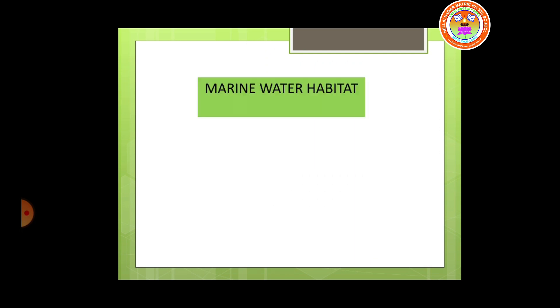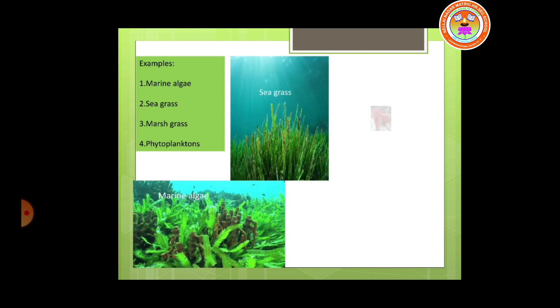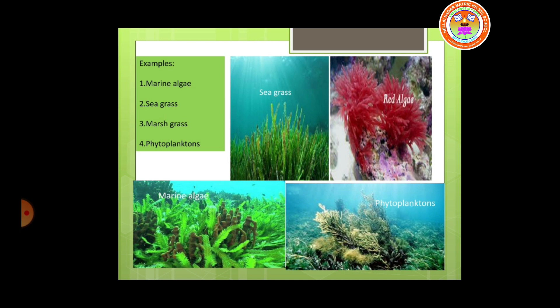Now we will move on to the marine habitat. Marine habitat is the ocean, which covers more than 70% of our earth's surface. Examples of organisms which live in the marine habitat are marine algae, sea grass, marsh grass and phytoplanktons. Algae come in different types — red algae, blue-green algae, and brown algae — based on the pigments present in them. Phytoplanktons are tiny water-based plants.